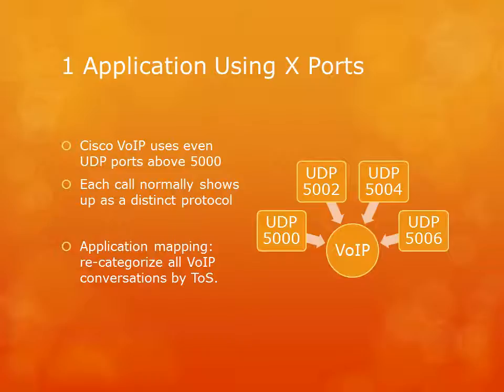Something to remember: this only affects the port number classification of that conversation. The original IP addresses and all the other data contained in the flow are unaffected — so you'd still have visibility into which individual IP pairs participated in the conversations.